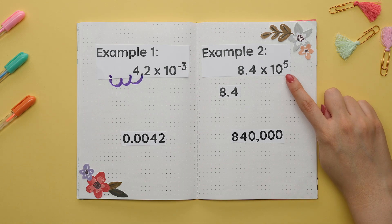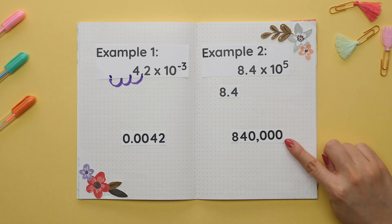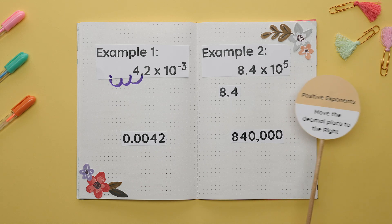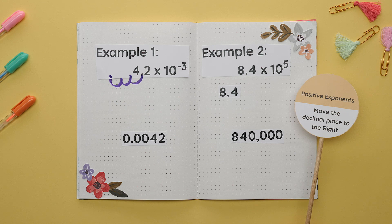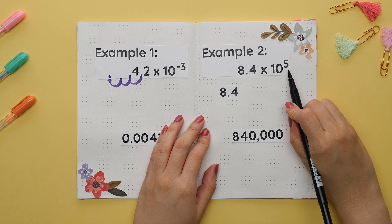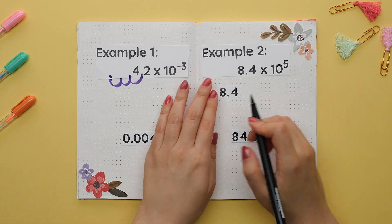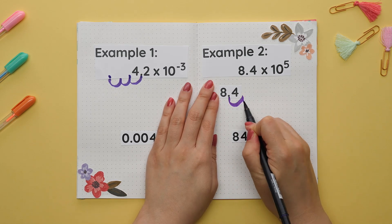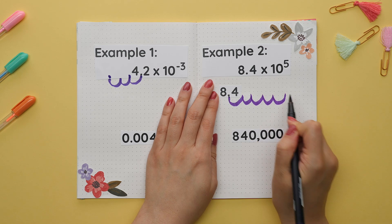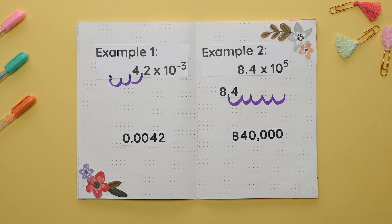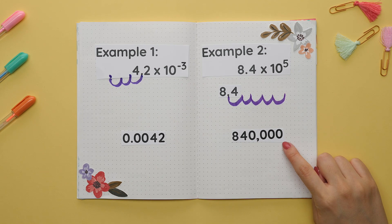For our second example we will convert 8.4 times 10 to the fifth power to standard notation. The exponent tells us how many times we move the decimal over and the sign of the exponent tells us which way to move the decimal. Since our exponent is positive five, we will move the decimal to the right five times. When we do this we get 840,000.